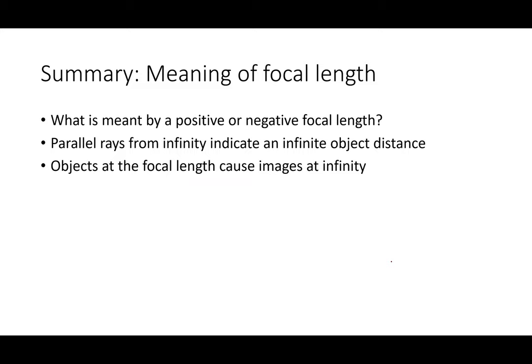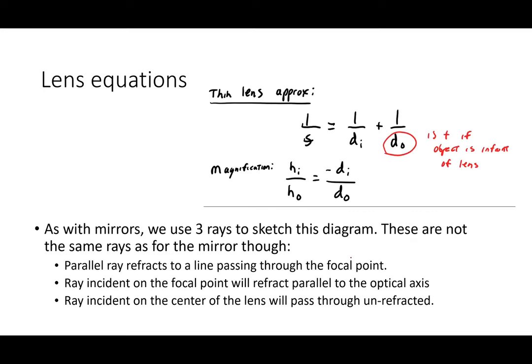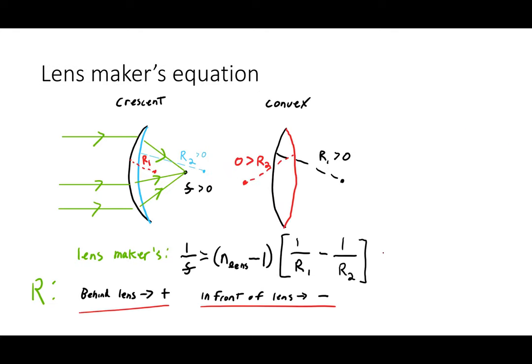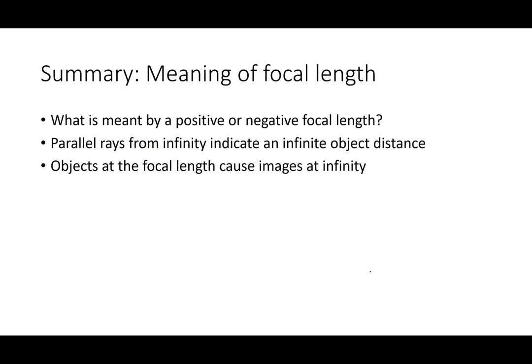A positive focal length means parallel rays bend to a point behind the lens — this is a converging lens. A negative focal length means parallel rays diverge from a point in front of the lens. Just like with mirrors, the focal point is where parallel rays converge. An object infinitely far away creates an image at the focal length, and an object at the focal length leads to an image infinitely far away.